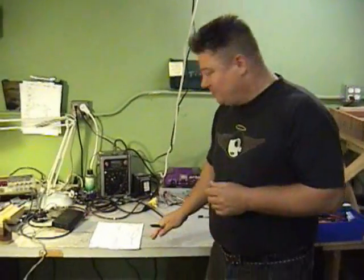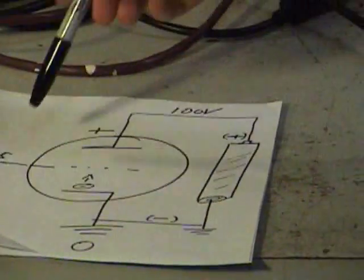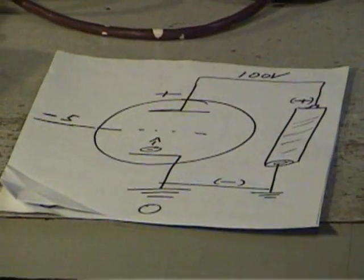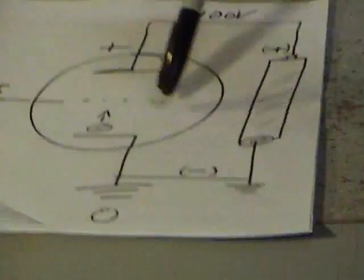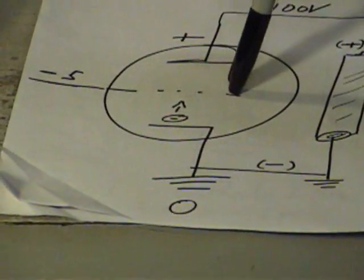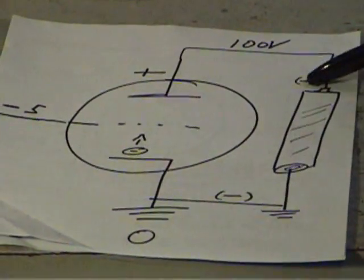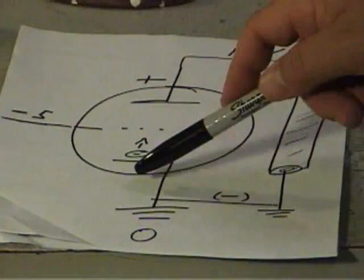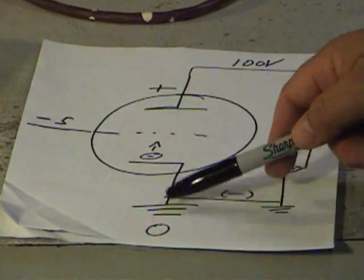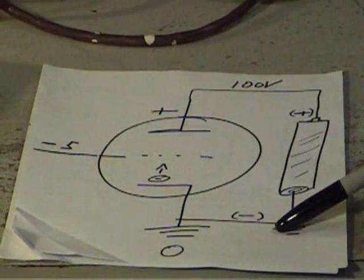I want to show some little drawings I made to help illustrate what bias is and how it works. This little symbol, this circle, is a tube. This is called a plate, this is the cathode and that's the grid. The grid is where your guitar signal ends up. In this simplified drawing, we've got a battery connected to this thing with plus at the plate and minus at the cathode. The cathode and the minus are usually connected to ground.